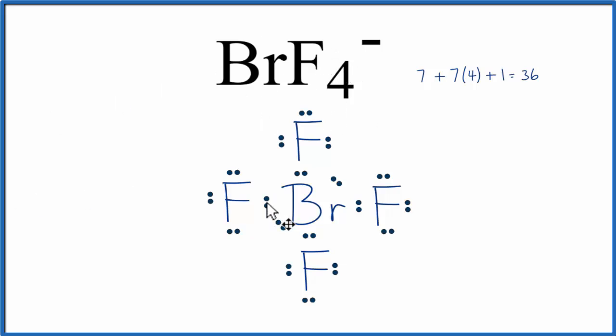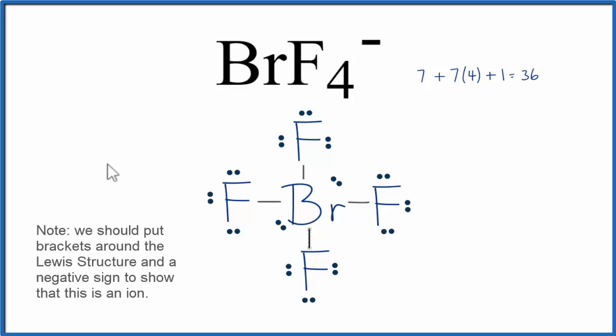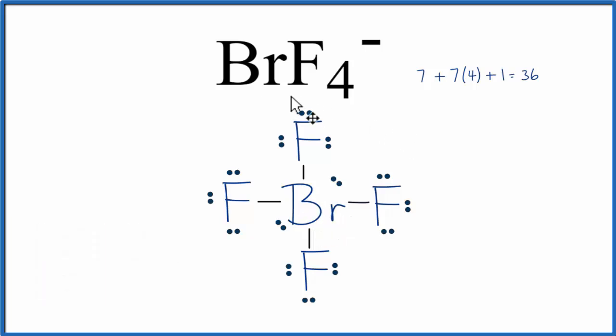Oftentimes you'll see these bonds replaced with lines, which makes it look cleaner and shows that these are the lone pair electrons on the central Bromine. Either way, this is the Lewis structure for BrF4-, and this is Dr. B. Thanks for watching.